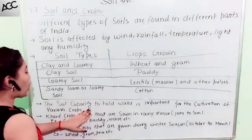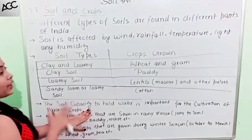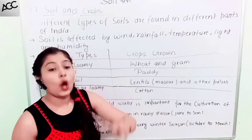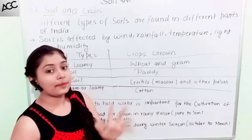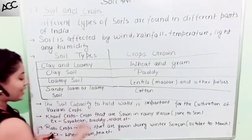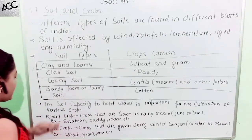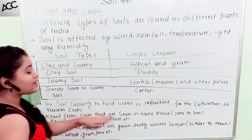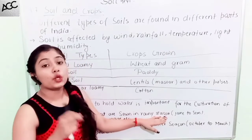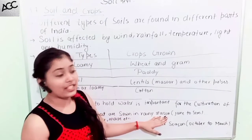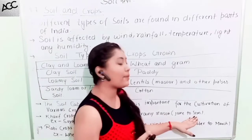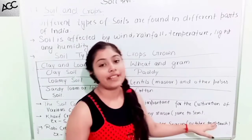If we talk about crops, there are two types of crops. One is Kharif crops and one is Rabi crops. There is a short detail that we have made. Kharif crops are sown in the rainy season and harvested in the summer days — from June to September.